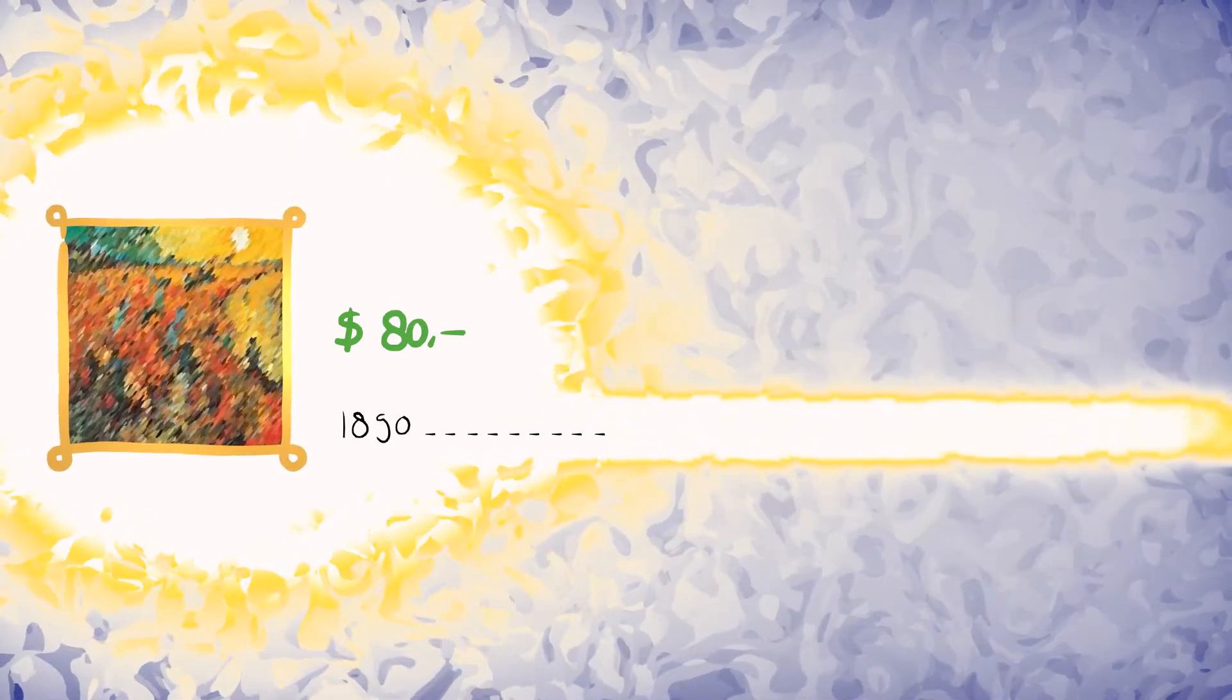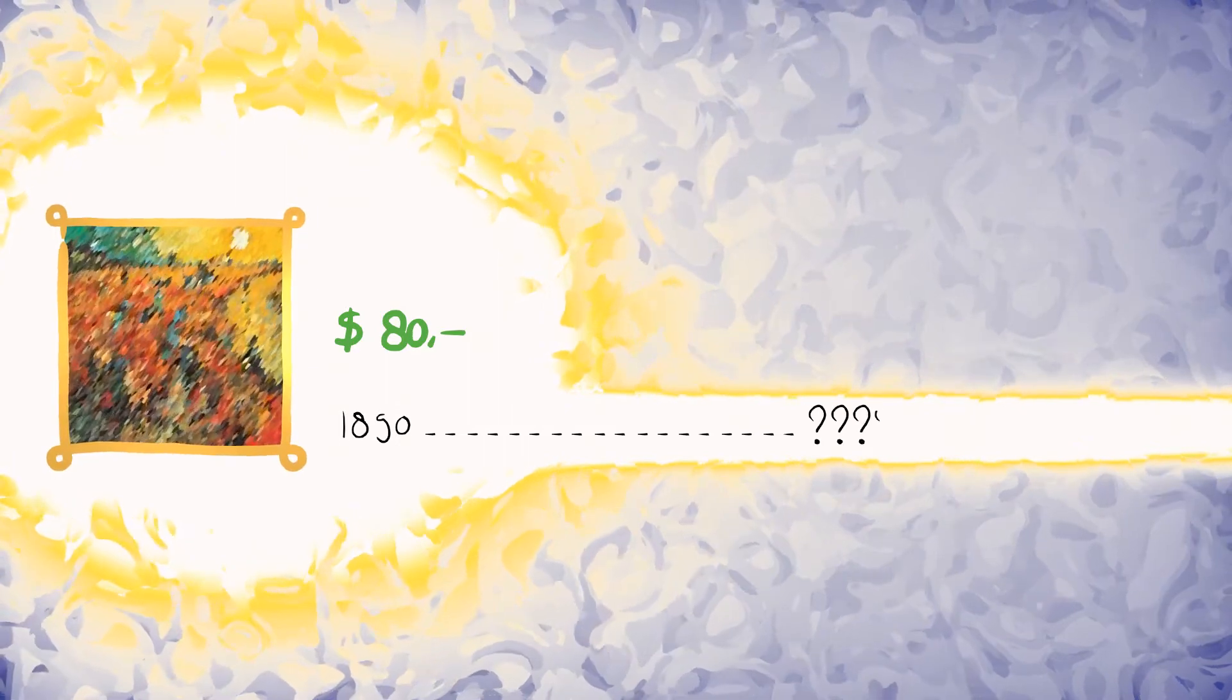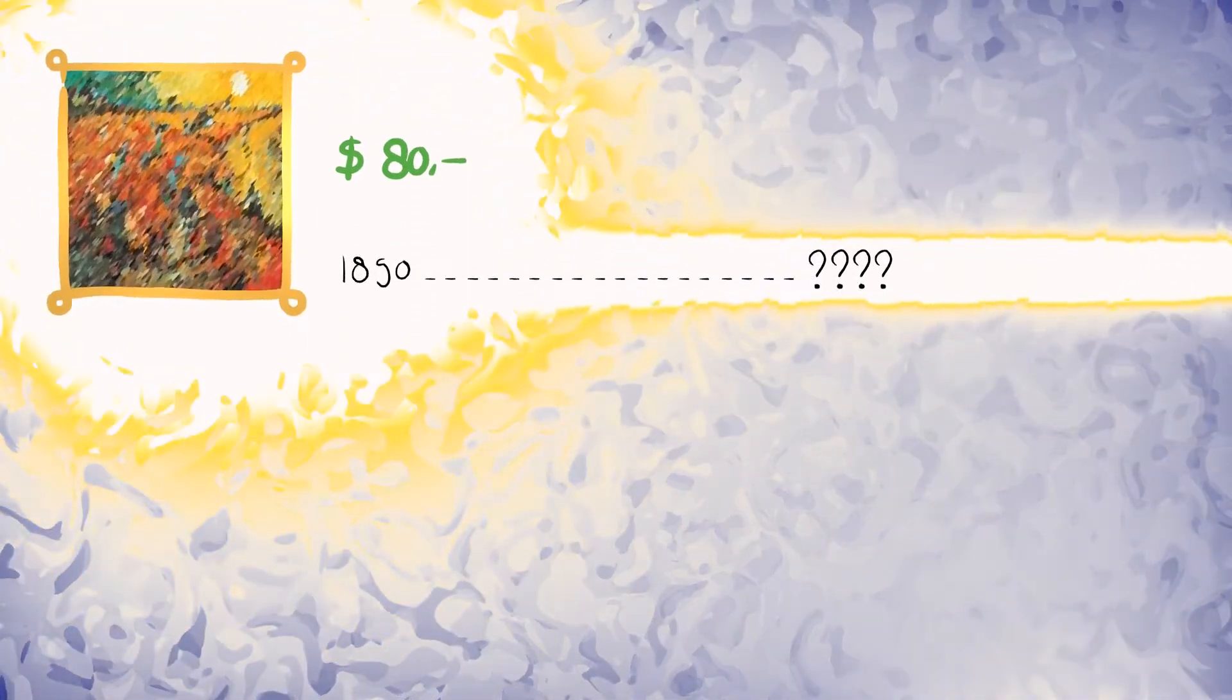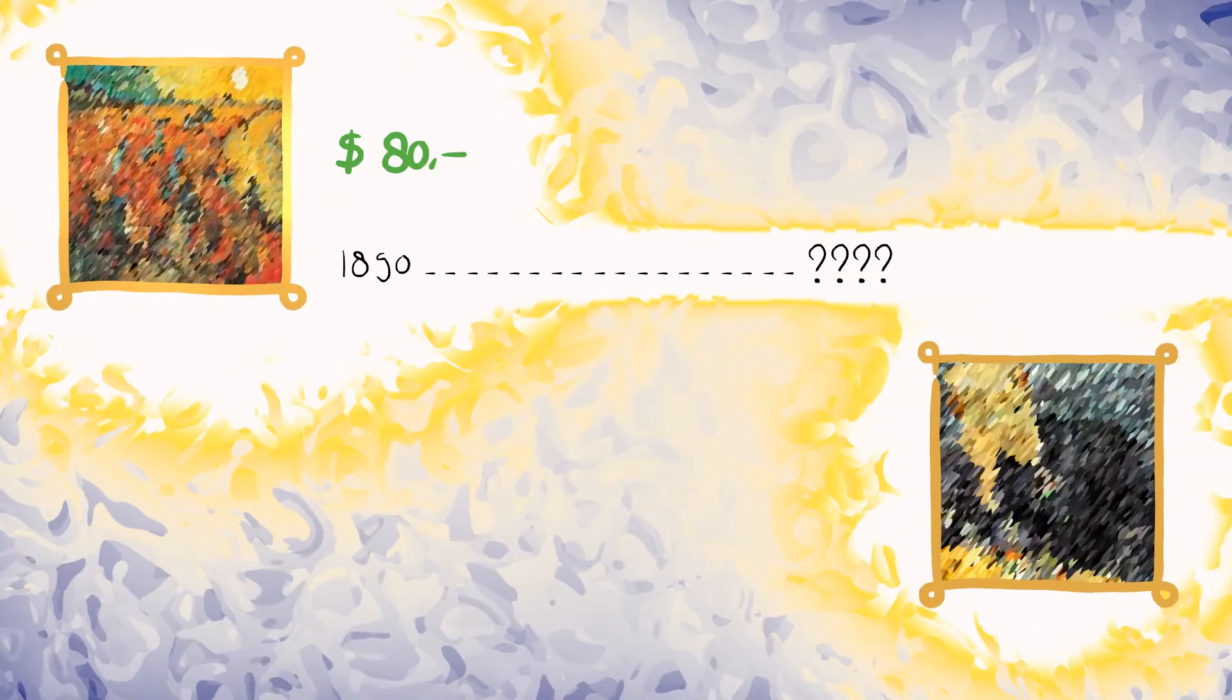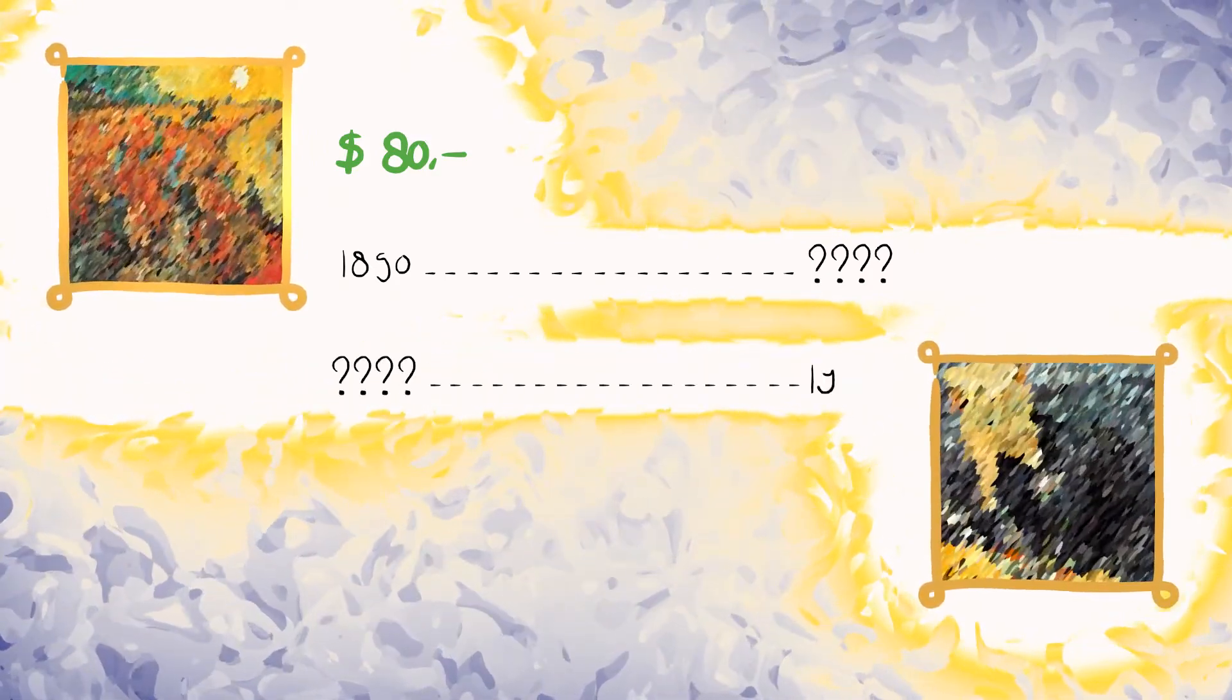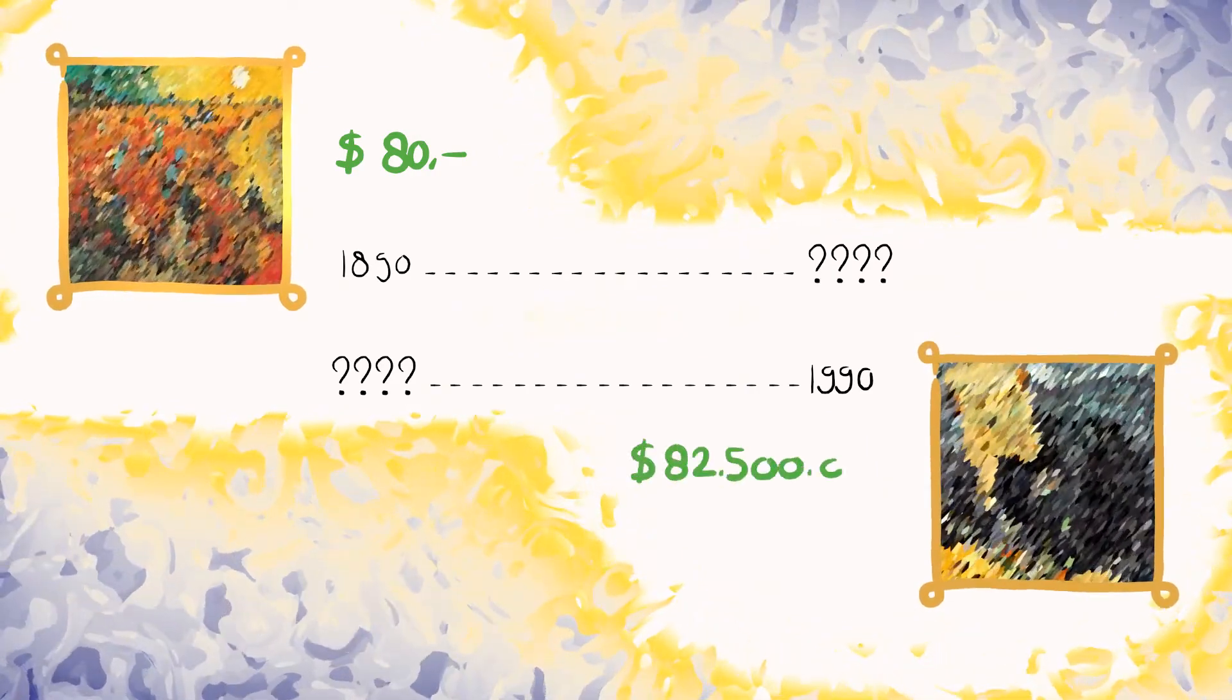Sadly, this specific painting hasn't been sold in the last 100 years, so we don't have a recent price for it. But let us assume for now that our distant family bought van Gogh's most expensive painting ever sold. And that painting was conveniently last sold exactly 100 years later, in 1990, for 82 and a half million dollars.